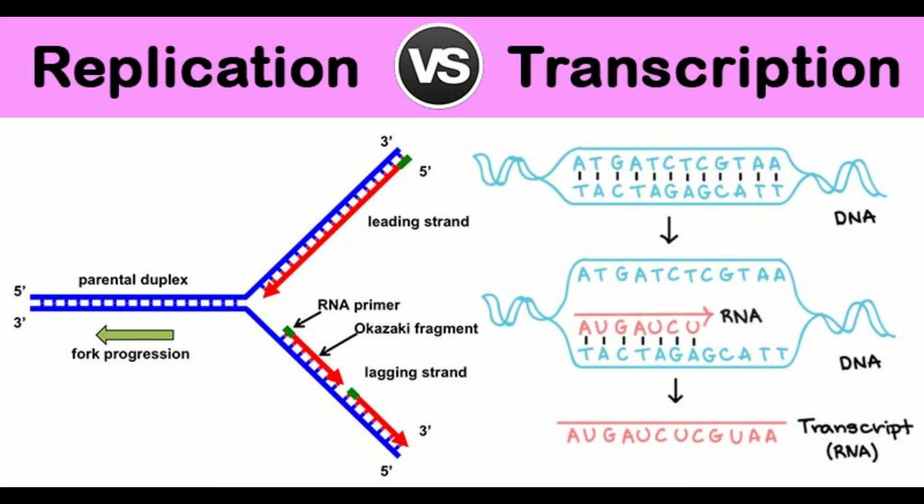14. Product: Replication produces two daughter DNA molecules. Transcription produces mRNA, tRNA, rRNA, and non-coding RNAs like microRNAs.